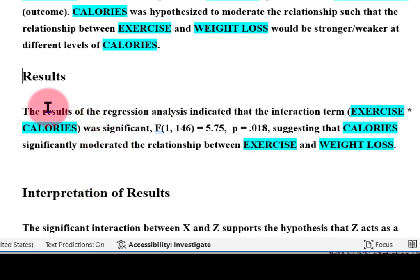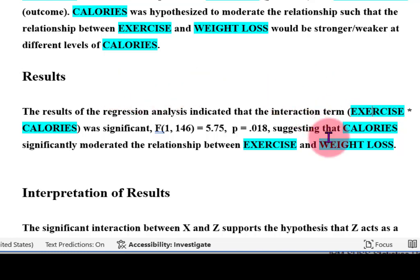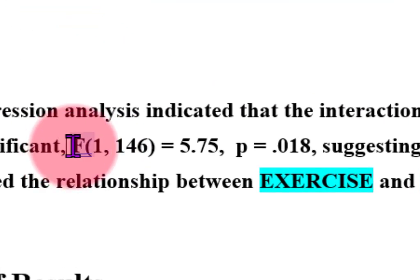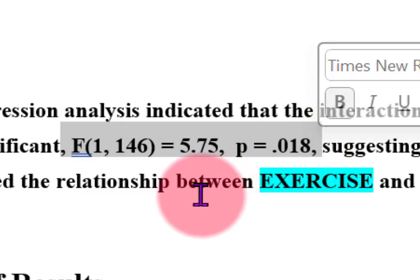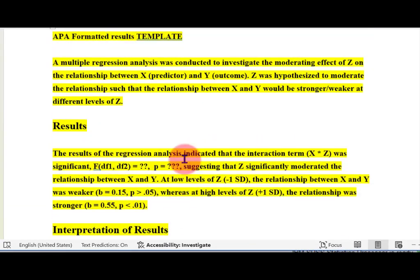I changed the template so X was the predictor, Y was the criterion variable, and Z was the suspected moderator. So X was exercise, Y was weight loss, and Z was calories. This is the number you have to report from the Hayes PROCESS output, so let me show you where you get that number — back up to the table.